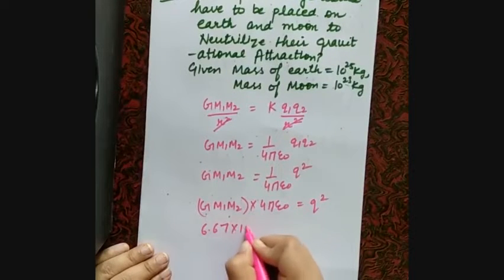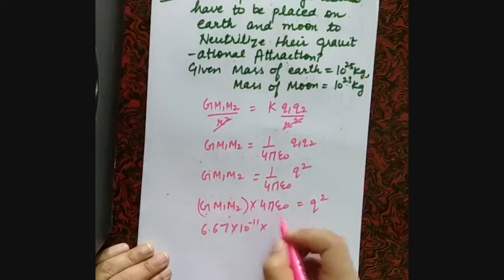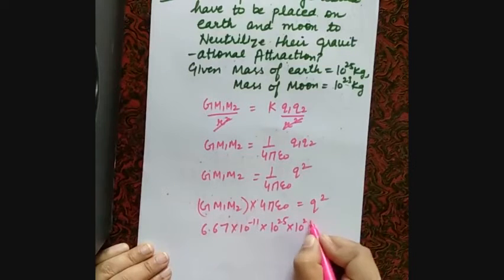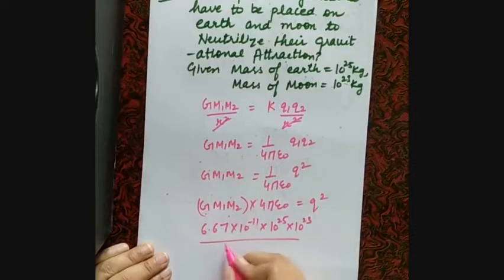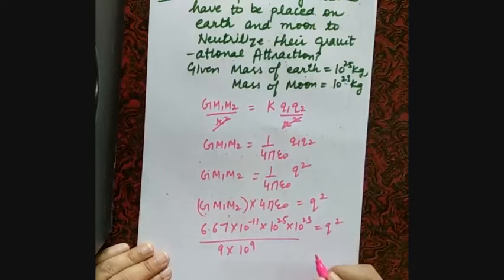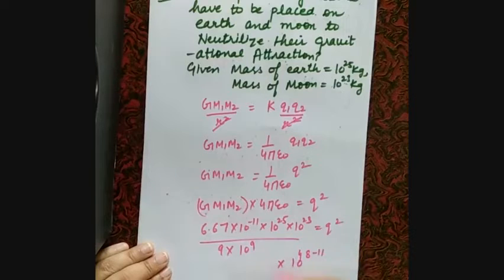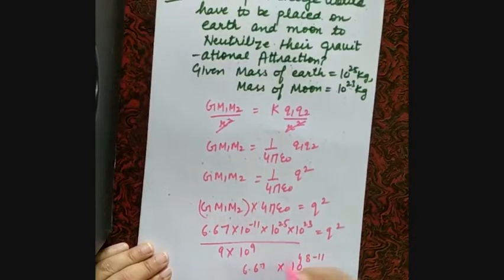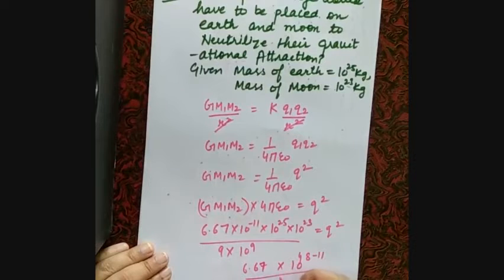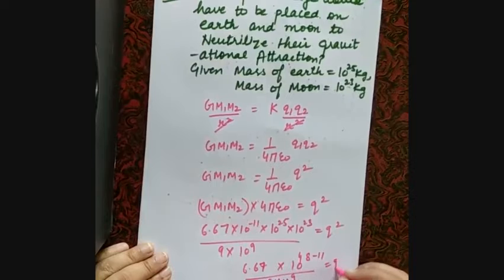Substituting known values: G = 6.67×10⁻¹¹, M1 (Earth) = 10²⁵ kg, M2 (Moon) = 10²³ kg approximately, and k = 9×10⁹. So we solve: Q² = G×M1×M2 / k = (6.67×10⁻¹¹ × 10²⁵ × 10²³) / (9×10⁹).